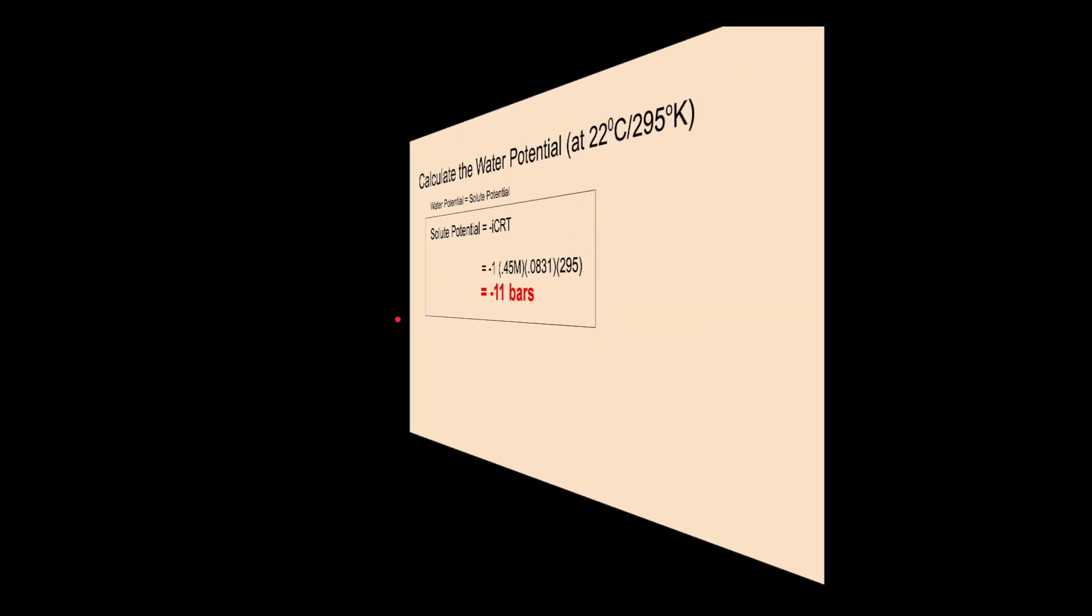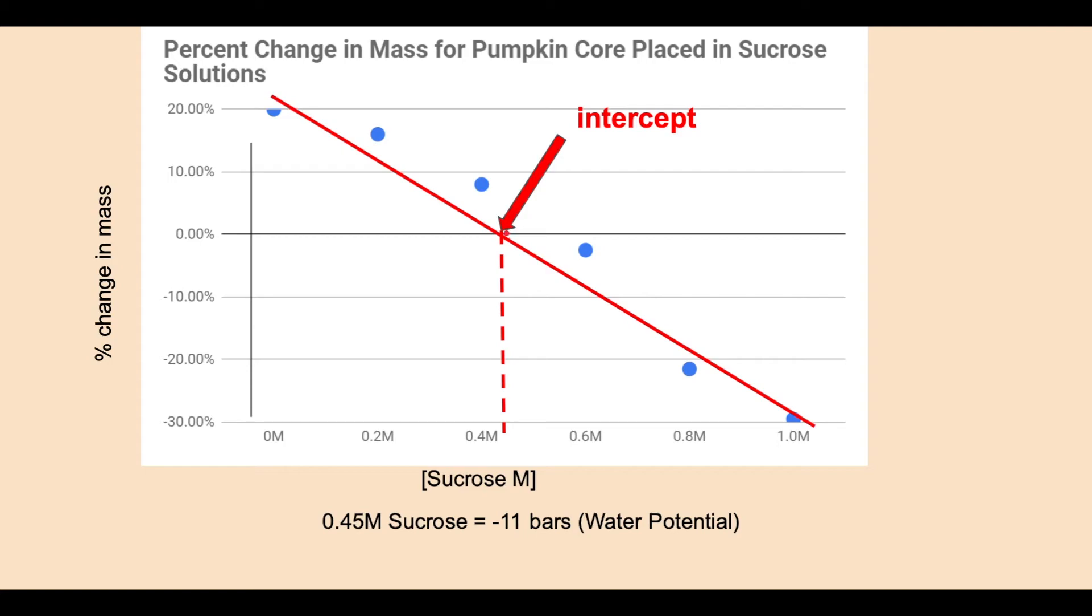So just to review, we got our number from where the intercept was to be 0.45 molar. That's where it's isotonic. So the known is 0.45 molar sucrose, but we don't know what really is in the pumpkin. It could be sucrose, it could be glucose, it could be starch, it could be all these dissolved substances. But what we do know is it's isotonic.